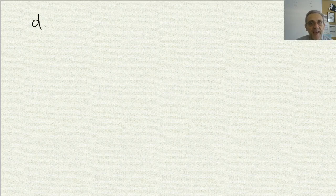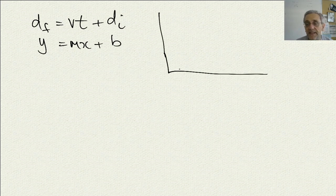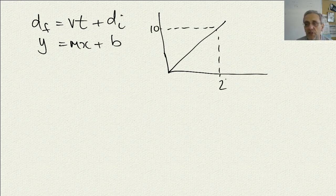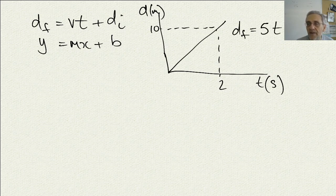Let's take a look at graphing this motion. If I have the equation df equals vt plus di, this is the same as y equals mx plus b, where v is the slope. For example, if this point is 10 and this point is 2 — d in meters, t in seconds — the slope is 10 divided by 2, so the equation would be df equals 5t plus 0, since it goes through the origin.